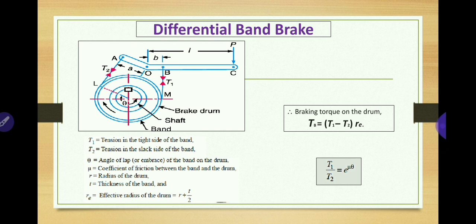In a differential band brake, the two ends of the band are connected to the lever at two different points apart from the fulcrum. From fulcrum O to A there is one distance, and from O to B there is another distance. If OA is greater than OB, force P is applied from the top side. If OB is greater than OA, force P is applied from the bottom side. You must remember this while solving problems.